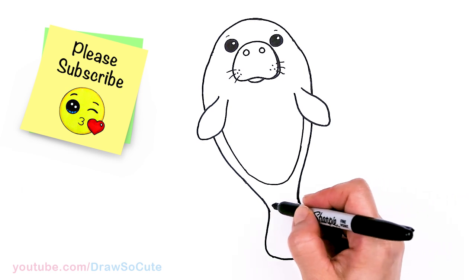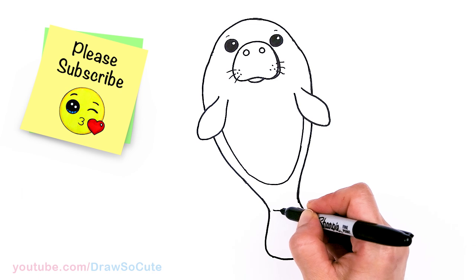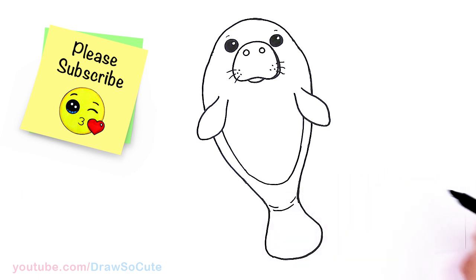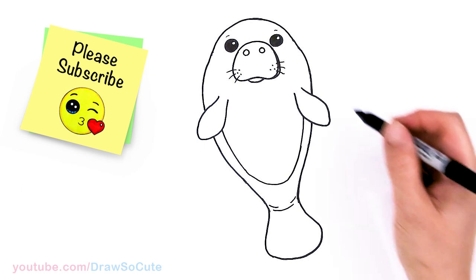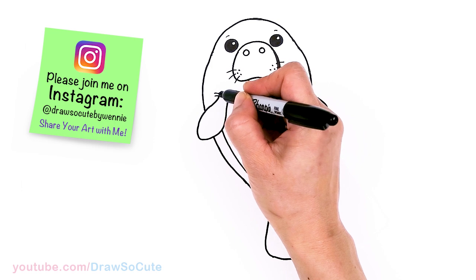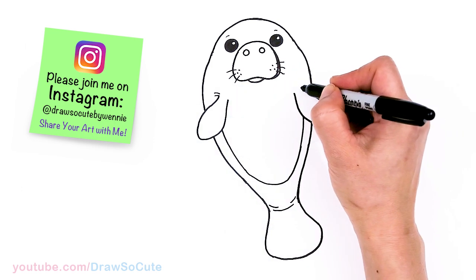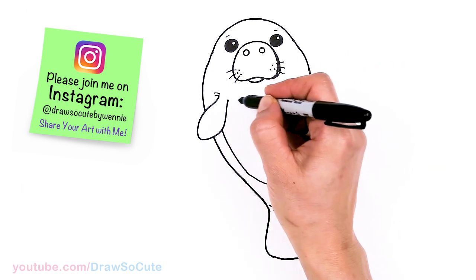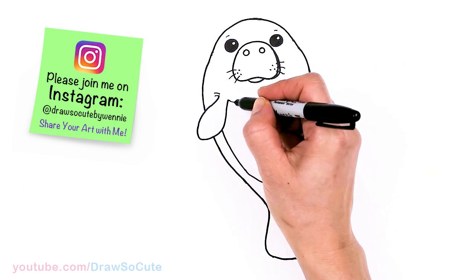And then on the tail part, let's draw some creases just for some detail. Let's show some lines, some detail right there. And then we're going to draw some more right here where the flippers are. This is going to go this way, but then on this side it's going to go this way, it's going to be more round.